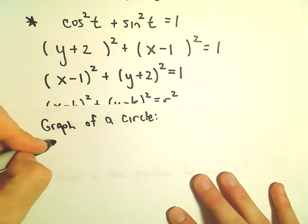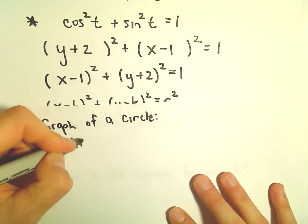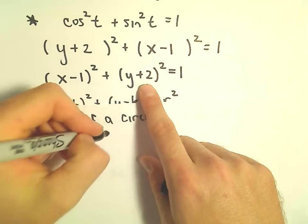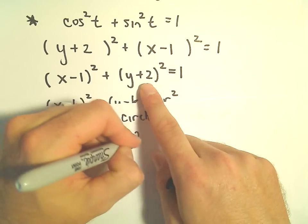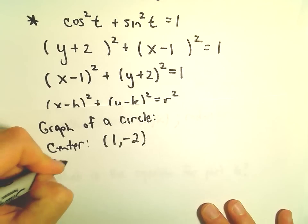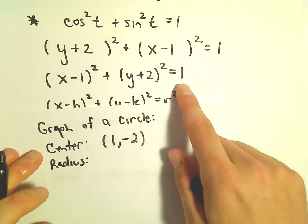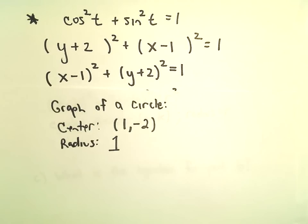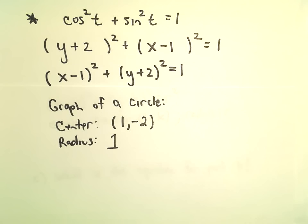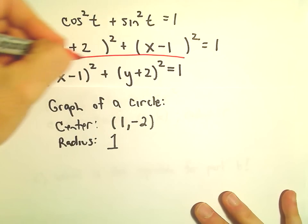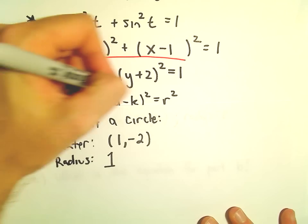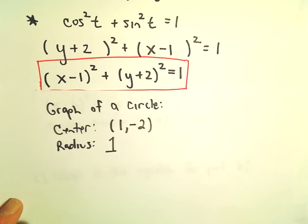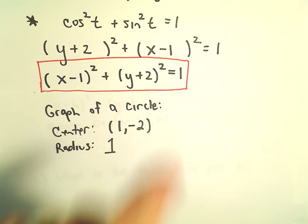The graph of a circle with center at positive 1 and negative 2, and with a radius—we take the square root, but this will just be square root of 1. So the radius equals 1. The answer to part C will be this equation. That's now the nice equation that describes our circle in the plane.